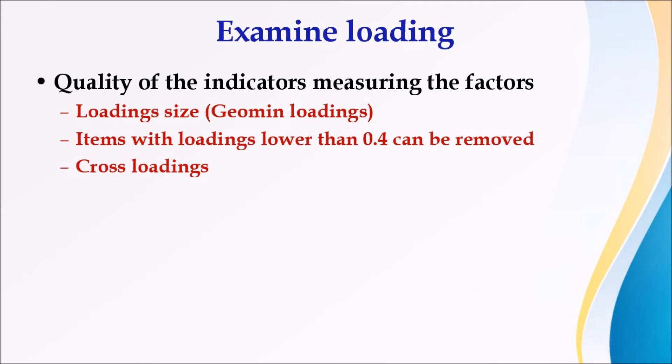Then you can also examine the loadings, and when you are examining the loadings, first you need to check the loading size, second one is the cross loadings. As loading size is concerned, you can consider all items or indicators with loadings less than 0.45 for removal. Secondly, you can also consider those items which are loading on more than one factor, maybe on two factors or three factors with higher loadings but smaller differences, then you can also consider them for removal.